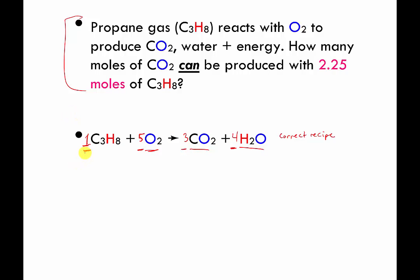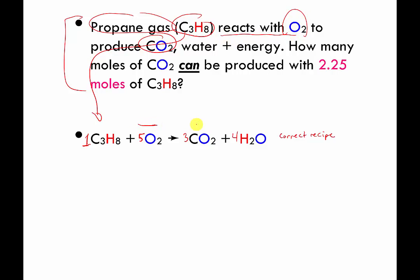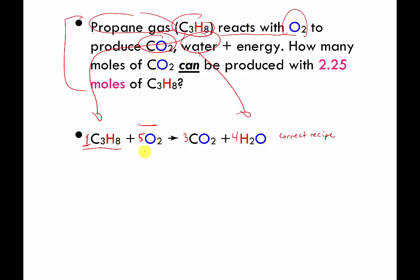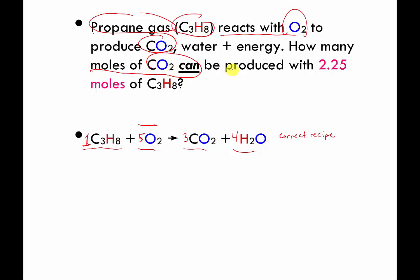Now let's look at the question. Propane gas — that's C3H8 — reacts with O2 to produce carbon dioxide and water. Don't worry about the energy term; it won't come up in this problem. The question is: how many moles of carbon dioxide can be made with 2.25 moles of C3H8?